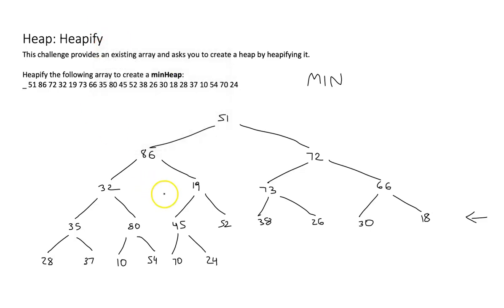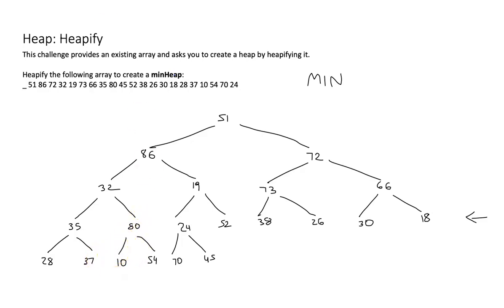45 needs to sink. 24 goes up. 45 has reached a leaf, so there's no further place to sink — we're done. Next: 80 is not less or equal than the children, so 80 needs to sink in the direction of the smaller child. 10 is smaller, so 80 sinks left and 10 comes up. 80 is now a leaf, so we're done. Next: 35 should be less or equal than the children — that is not the case. The smaller child is 28, so 35 sinks and 28 comes up.